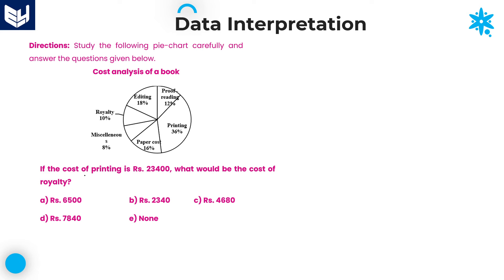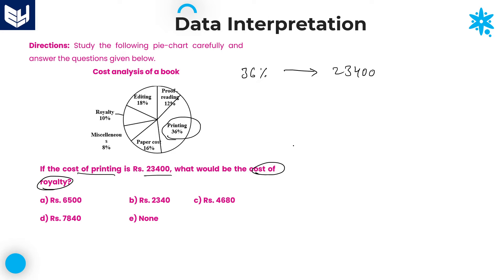Let's move on to the next question. If the cost of printing is 23,400, and printing is 36% of the total, then 36% equals 23,400. The question asks: what would be the cost of royalty? Looking at the pie chart, royalty is 10%. So given 36% equals 23,400, what is the 10% value?